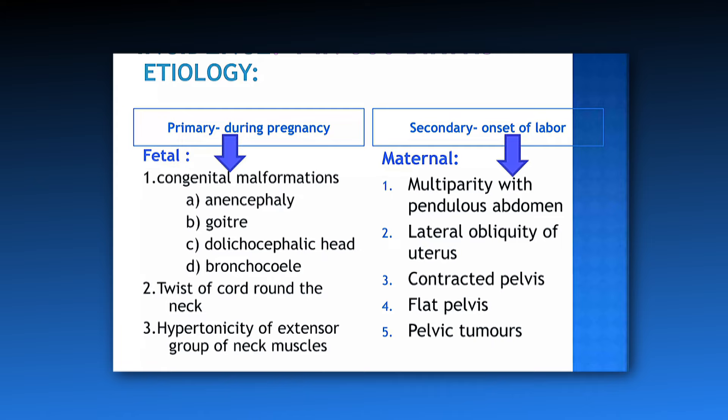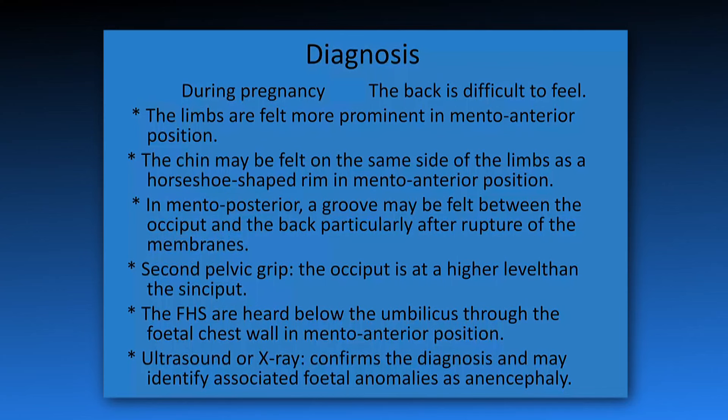Maternal causes occurring during the onset of labor include: multiparity with a pendulous abdomen, lateral obliquity of the uterus, contracted pelvis, flat pelvis, and pelvic tumors.